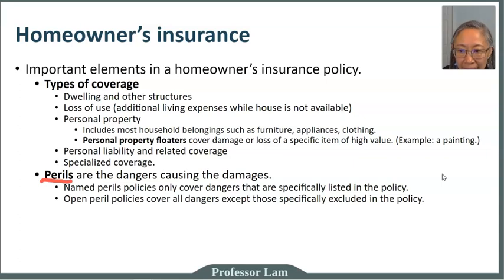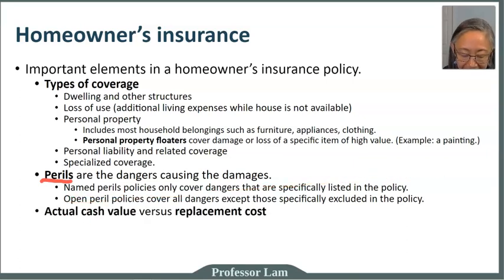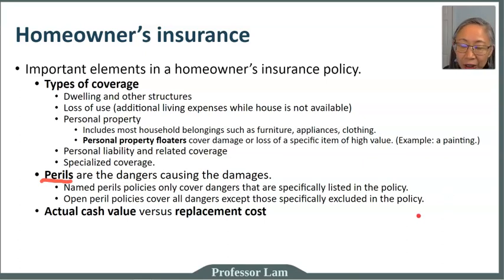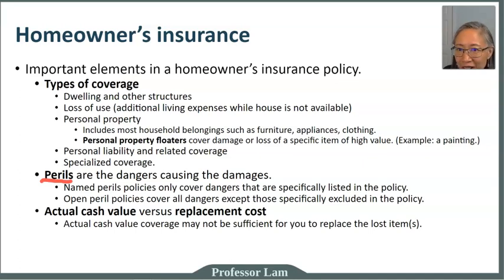In contrast to a named peril policy, you can have an open policy. An open policy covers everything except for events that are listed, so they are the opposite of each other. A named peril policy only covers events that are named; an open policy covers everything except those named events. The last thing to consider is whether coverage is for actual cash value or replacement cost.